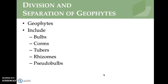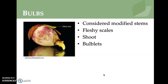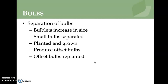Geophytes are underground storage structures that include bulbs, corms, tubers, rhizomes, and pseudobulbs. Bulbs are considered modified stems with fleshy scales, a shoot, and bulblets. A tulip bulb is shown as an example. Bulblets are smaller bulbs that will grow into smaller plants but eventually get larger. When bulbs are separated, the small bulbs will be planted and grown to increase in size.